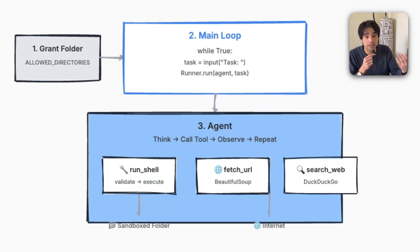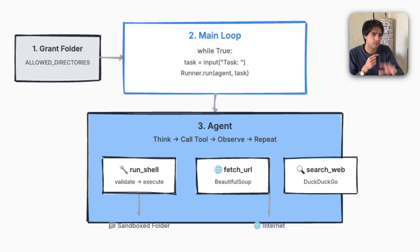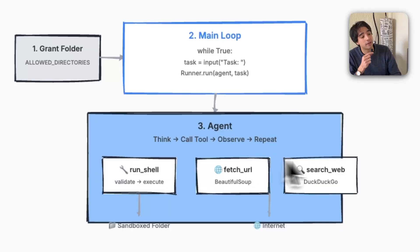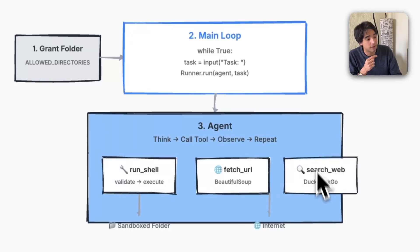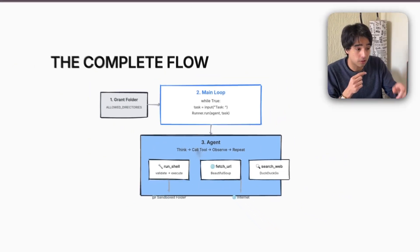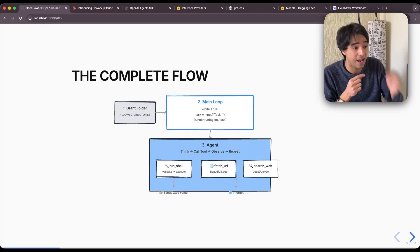The agent is going to complete the task and it's going to have access to three different tools. We have a run shell tool, which basically runs bash commands; a fetch URL tool; and a search web tool. The agent continues in that loop until it finishes the task.